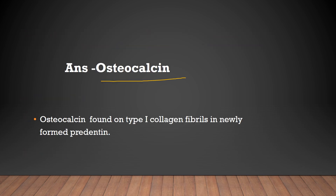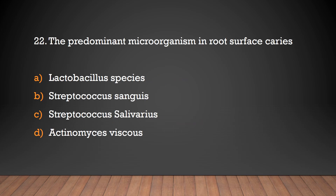The answer is osteocalcin. Osteocalcin is found on type 1 collagen fibrils in newly formed pre-dentine. The predominant microorganism in root surface caries — is it Lactobacillus species?